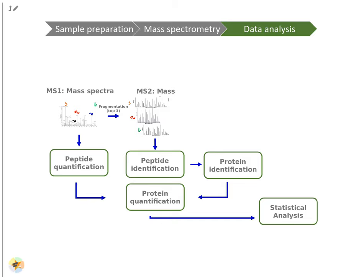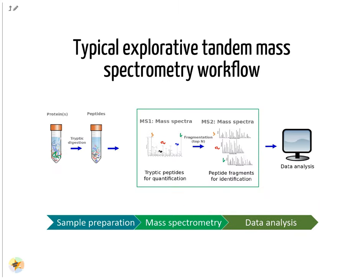The analysis of the acquired mass spectra comprises several steps. First, peptides are identified via the MS2 fragmentation spectra. From these peptide identities, the corresponding proteins are assembled. The MS1 spectra are used for peptide quantification. Peptide quantities are summarized into protein quantities, and the information about protein identity and quantity allows subsequent statistical analyses.